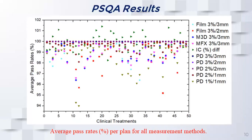This graph is a culmination of all the measurements across all clinical treatments — it's a very busy graph. The general consensus we found is that out of all 50 clinical plans, most of them tend to have an average pass rate very close to 100% for the gamma analysis index. Each measurement method does have a different degree of uncertainty, which has to be factored in. In clinical practice, a pass rate above 95% is considered acceptable, but in our case most of ours were around 100%.